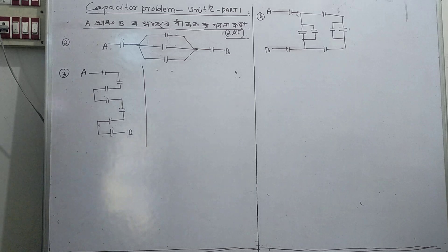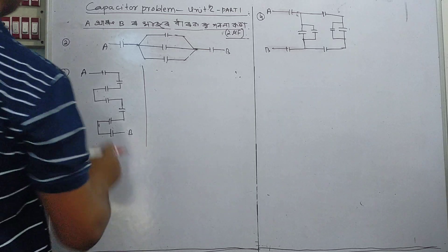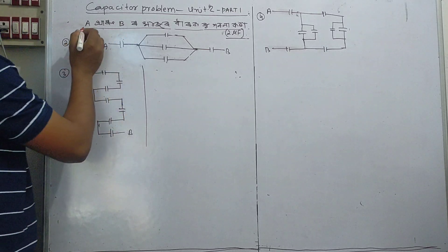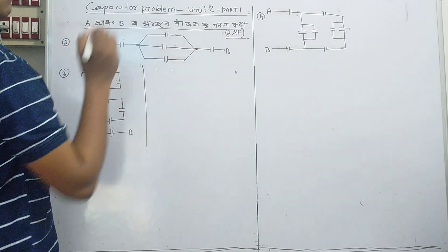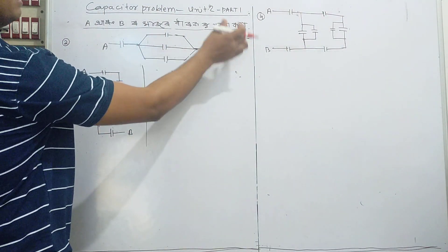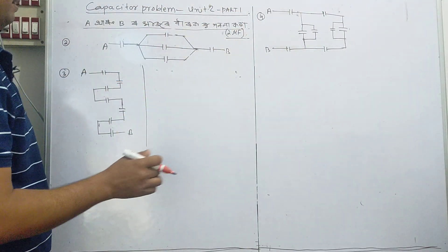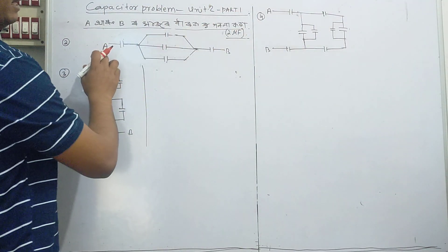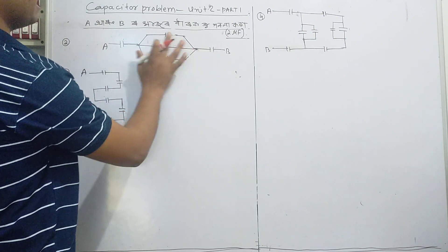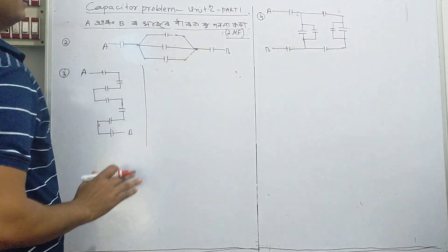Hello, this is the problem of 2, 3 and 4. A and B, we have two microfarads.